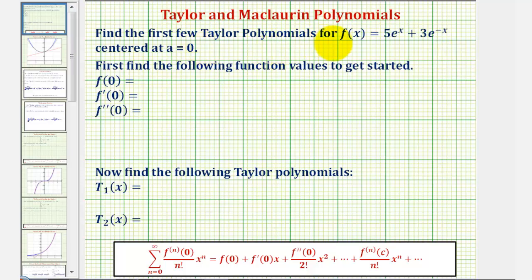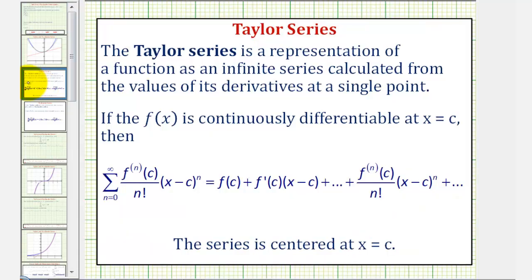We want to find the first few Taylor polynomials of the given function centered at a equals zero. For a quick review, a Taylor polynomial is formed when we use a finite number of terms from a Taylor series, where a Taylor series is a representation of a function as an infinite series calculated from the values of its derivatives at a single point.